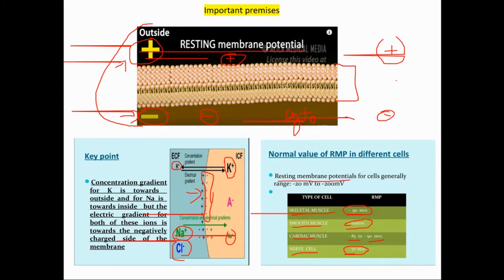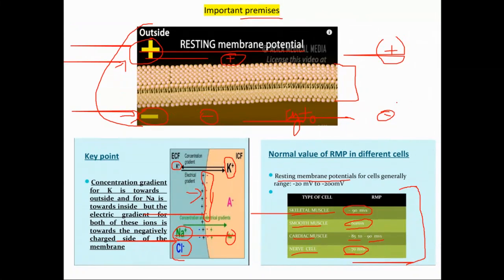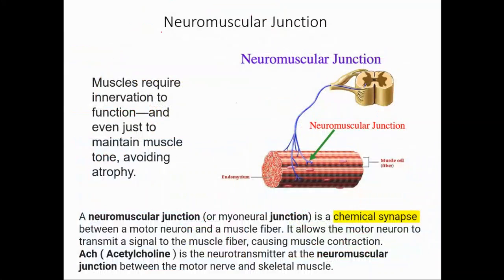This is true for all kinds of cells, and is highlighted especially for the nerve and muscle cells that we are interested in. This is a premise, because if you don't know this, you wouldn't understand what happens during an action potential. Now let's go back to our neuromuscular junction.